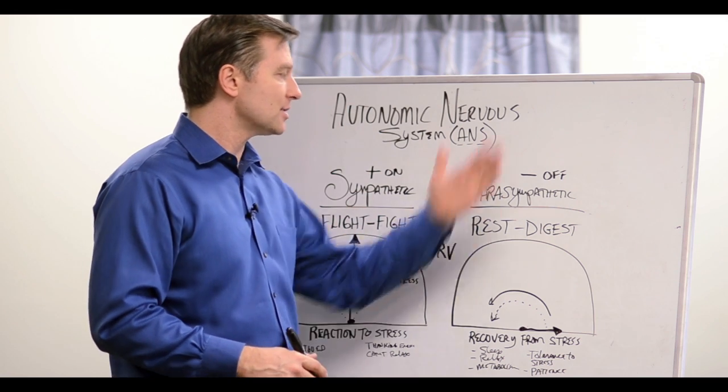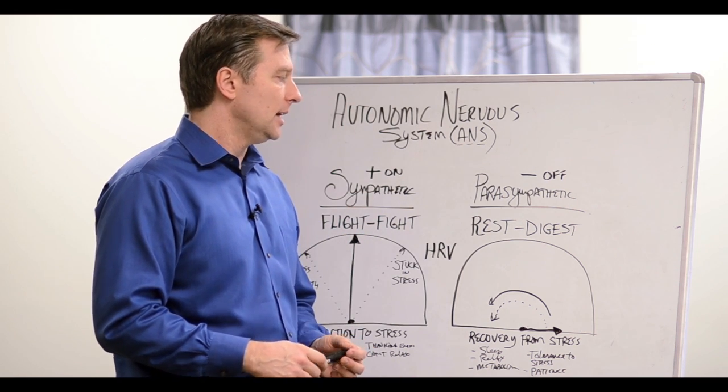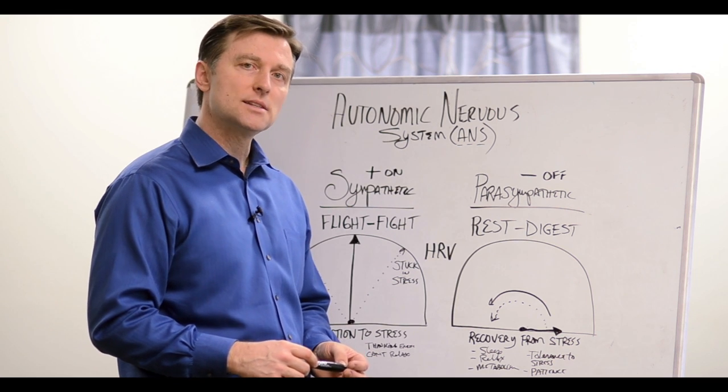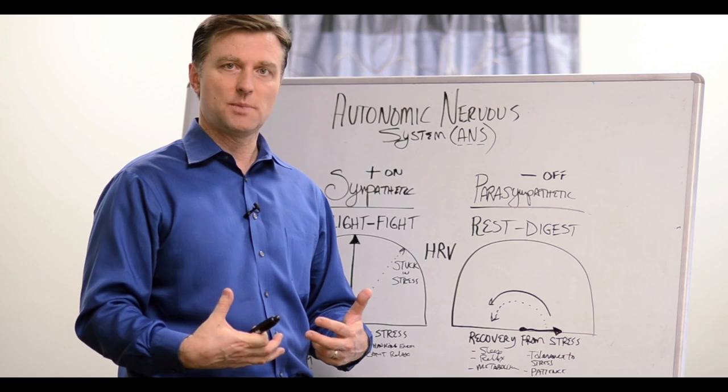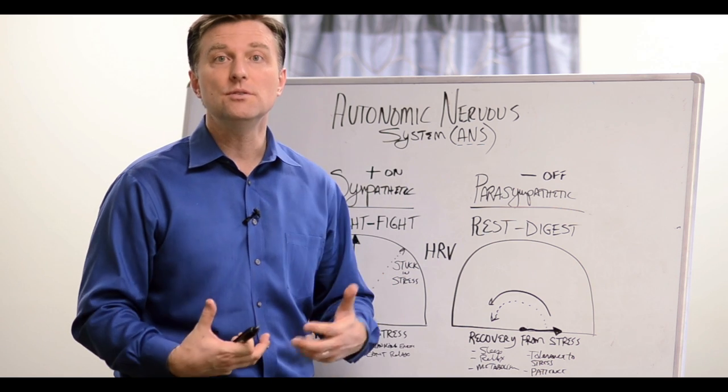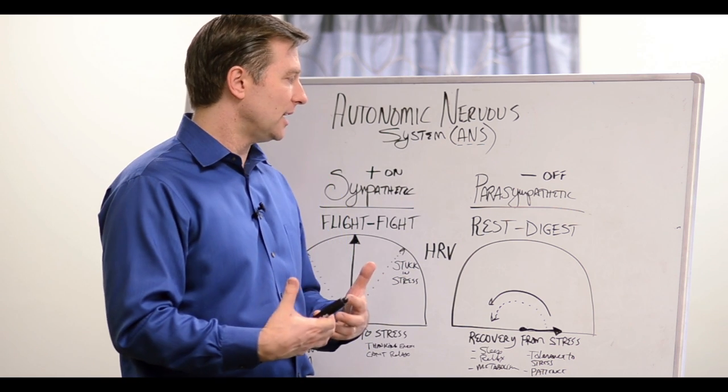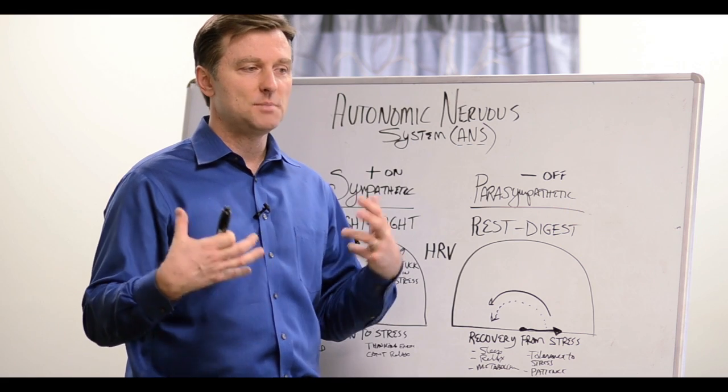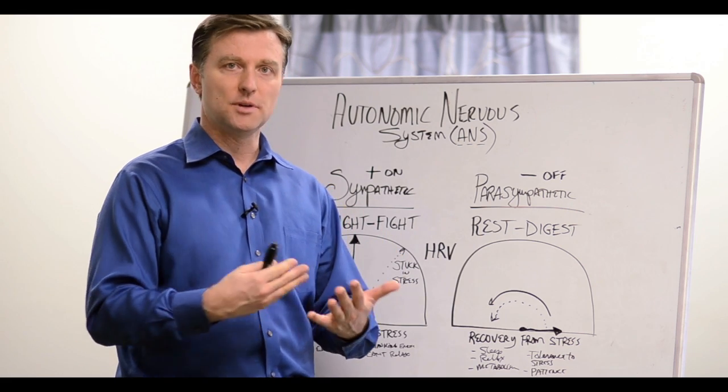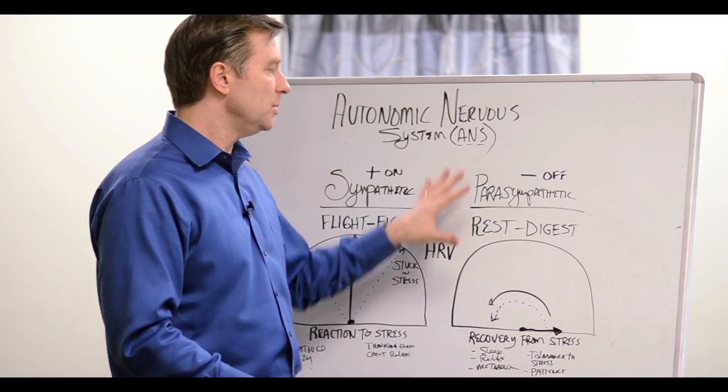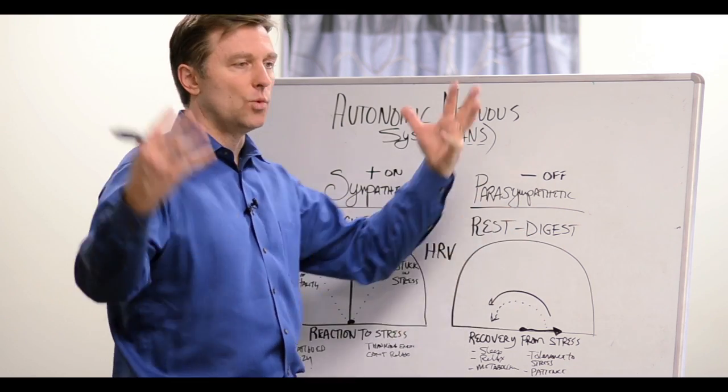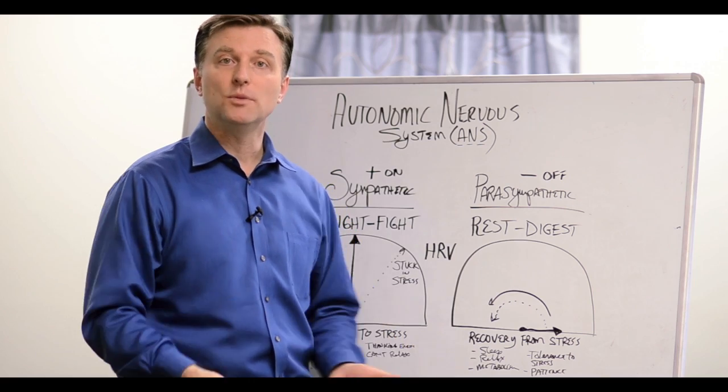We also have the off switch, which is called the parasympathetic. That has to do with more rest, sleep, and digestion. You can't digest if you're being chased by a tiger. You can't reproduce if you're being chased by a tiger. So when these bodies are in stress states, they have reproductive problems, they have hormone problems, they have digestive problems, and they can't sleep. We consider this the system that helps relax you and calm you down.